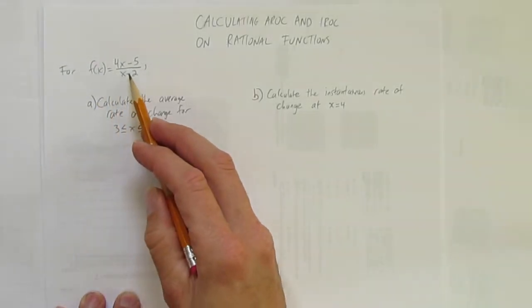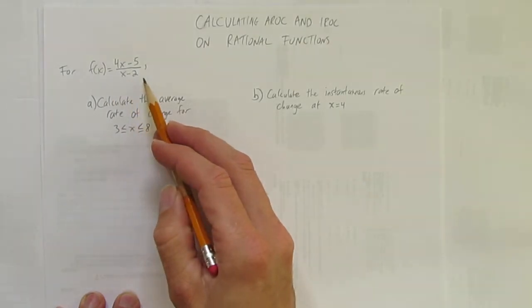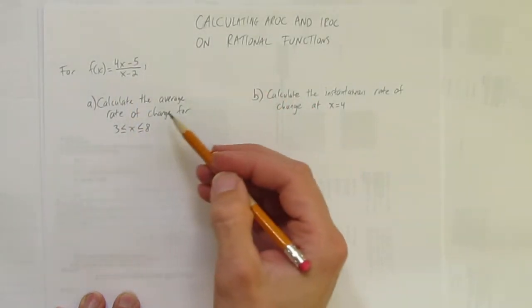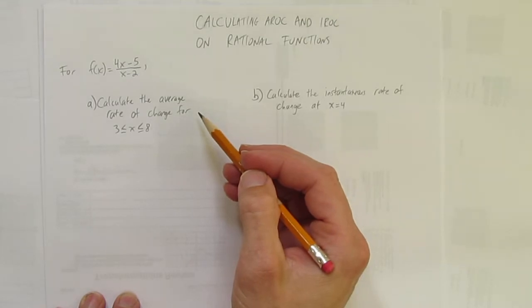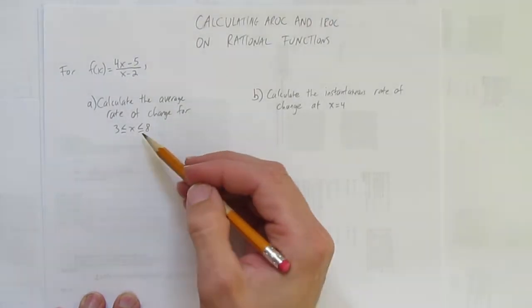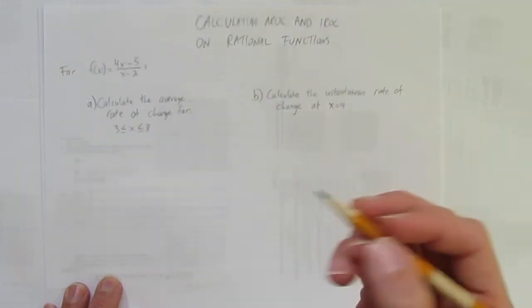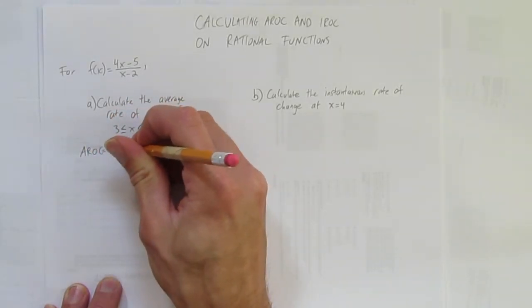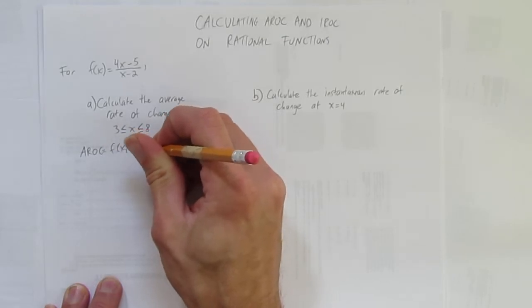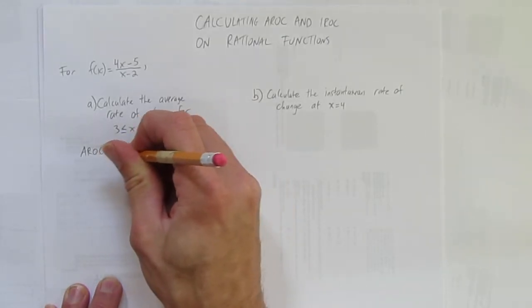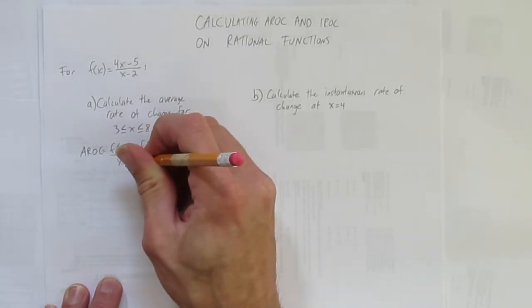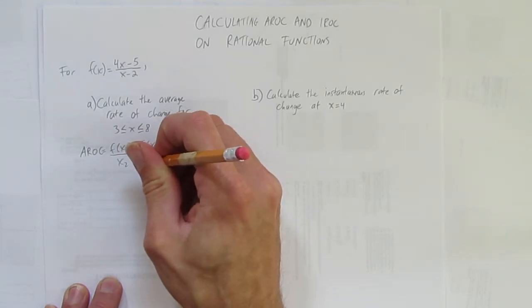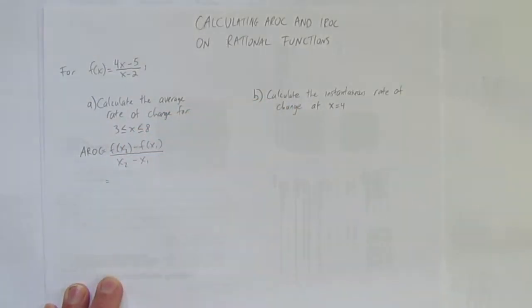For f(x) = (4x - 5)/(x - 2), a rational function, first calculate the average rate of change where x is between 3 and 8. Let's start with that. First show your formula. The AROC formula is f(x2) - f(x1) all over x2 - x1. It's just the slope formula written in function notation.